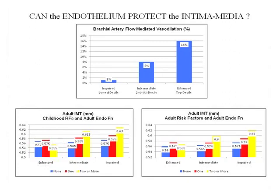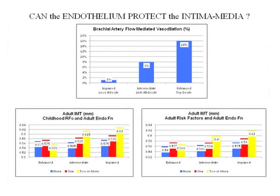The fact that they had well-preserved endothelial function protected them from the risk factors, so their IMT measurement is small. Individuals with impaired endothelial function — the more risk factors they had as kids, the more soft plaque was present as adults. The same situation in those with intermediate endothelial function: the more risk factors, the more plaque. The same relationship holds when looking at adult IMT related to adult risk factors and adult endothelial function.